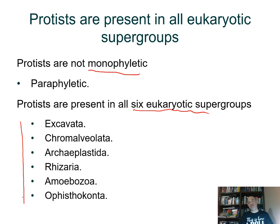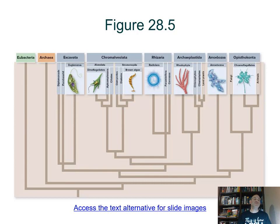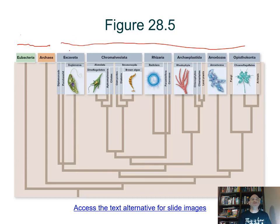You want to make sure you can list these six supergroups from memory and have some idea of what representative organisms go in each group, as group membership suggests evolutionary relationships. These will be covered in lab as well. This diagram shows the overall history and relationships among organisms, with prokaryotes representing those two domains, and then the domain Eukaryota. These are the six supergroups.